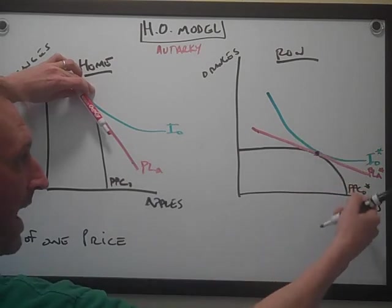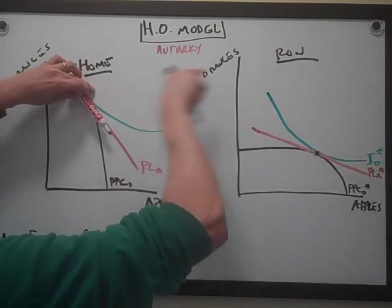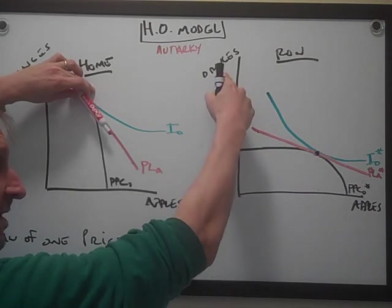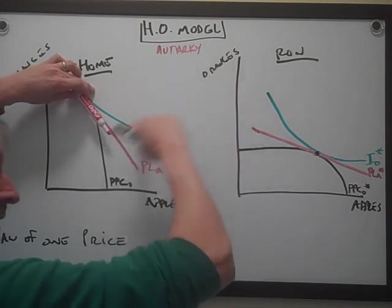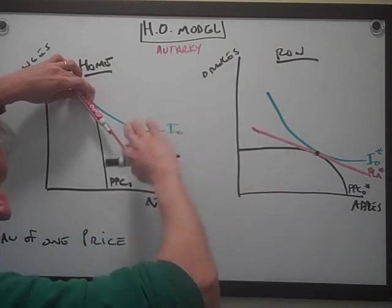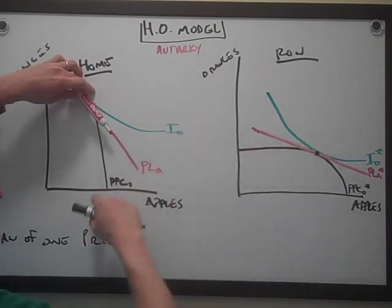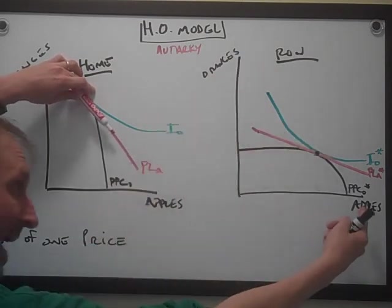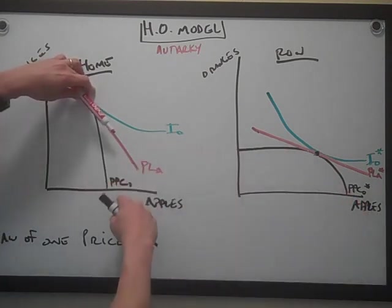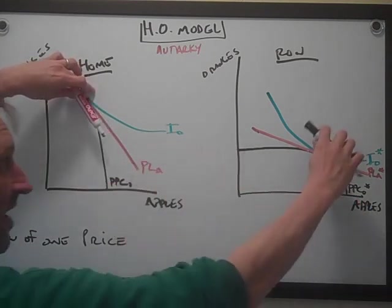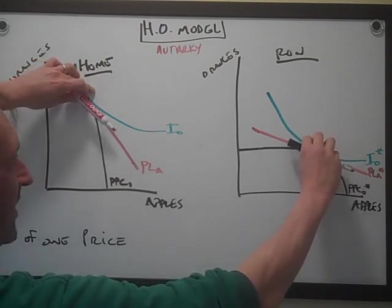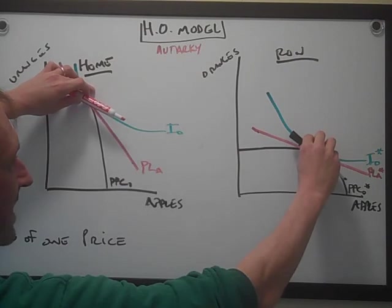Prices are different, but when apples start flowing in this direction and oranges start flowing in this direction, well, expensive oranges brought over here from home — they were expensive in ROW before — the price starts falling because more oranges come over. Similarly, apples are expensive here, but when apples from ROW start flowing in this direction, supply goes up and apple prices fall. When that happens, these two price lines converge and they get the same angle.